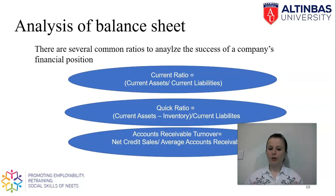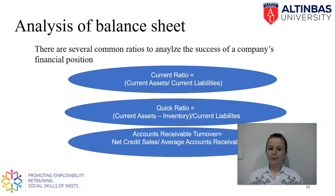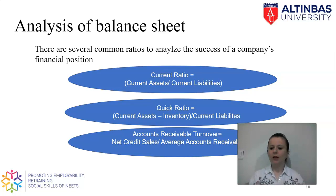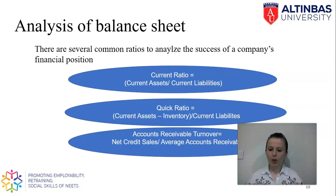Another ratio we can use is the quick ratio. It is exactly the same as the current ratio but with one single difference: we simply deduct inventory from current assets and then divide by current liabilities. The aim is to account for what happens if we cannot convert inventory easily to cash to pay current debt. So we are left with only cash and cash equivalents like accounts receivable and notes receivable, and we make sure we are covering current liabilities. We expect the quick ratio to be around one — at least one time we should be able to pay the current debts immediately.